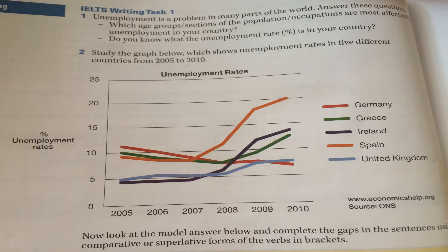To sum up, Spain had the highest unemployment rate of all the countries in 2010, while Germany had the lowest, and the biggest change over the period was in Spain. Although the increases are not enormous, they undoubtedly have a significant effect on the economy.